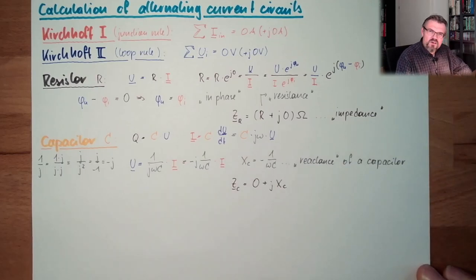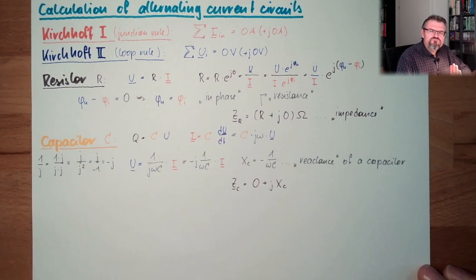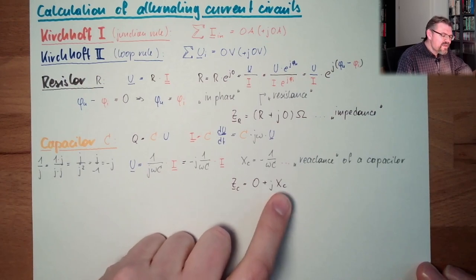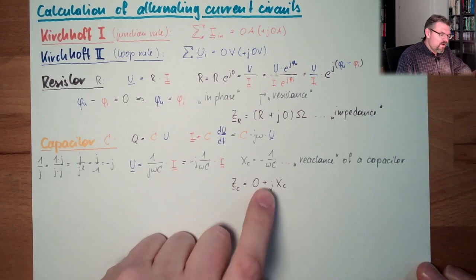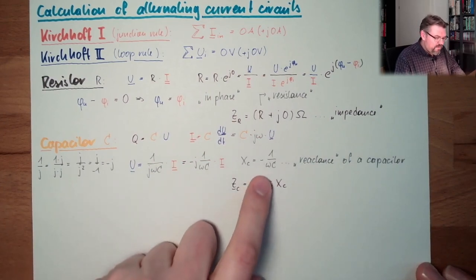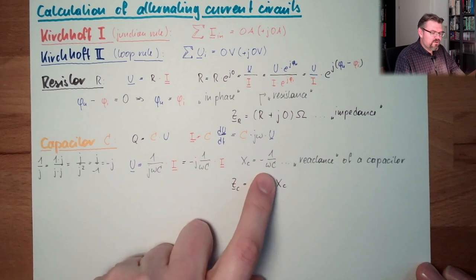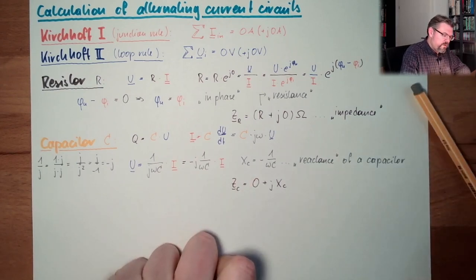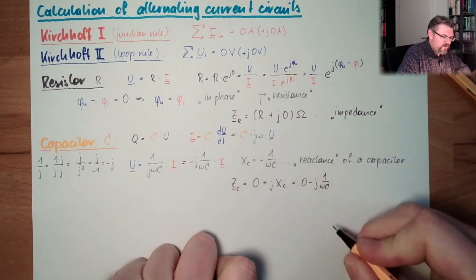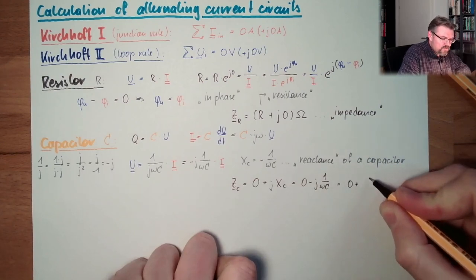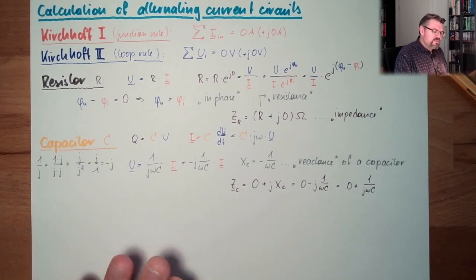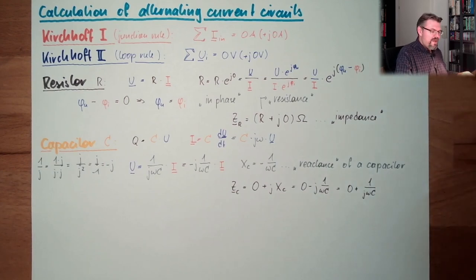So for AC current, the capacitor acts somehow like a resistance. But with no resistance, but with reactance. Reactance is the imaginary part of the impedance. Resistance was the real part of the impedance. And this imaginary part of the impedance, in case of a capacitor, it's minus 1 divided by omega C. Maybe I should write this down. So this is 0 minus J divided by omega C. Or it's 0 plus 1 divided by J omega C. You can find both forms.